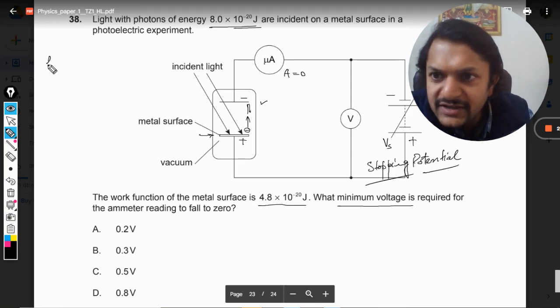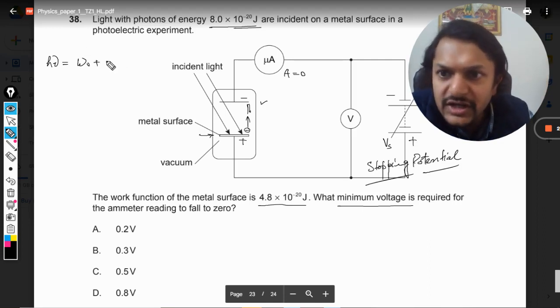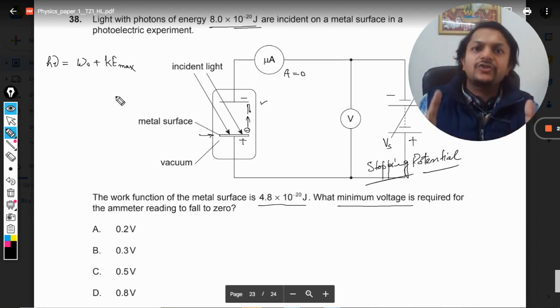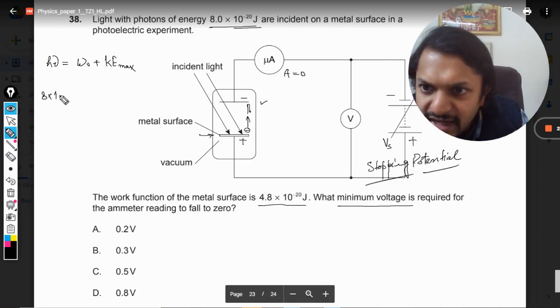That is the concept here. So first of all, we need to find the maximum kinetic energy. Einstein's photoelectric equation is as follows: hν is the energy of the photon, and some of this energy is taken by the plate as work function, and the rest of the energy will be given to the electron as the maximum kinetic energy possible.